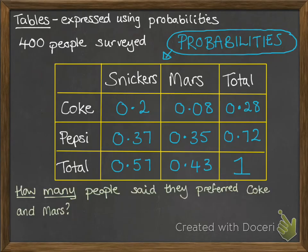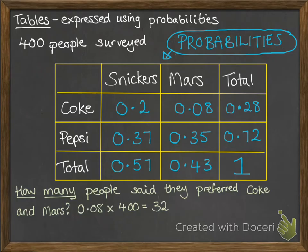So how many people then said that they preferred Coke and Mars? We've got this 0.08 chance, and we've got 400 people that were surveyed, so we need to find 0.08 as a proportion of 400 — that means we multiply. So that's going to be 32 people in this group who said they preferred Coke and Mars.